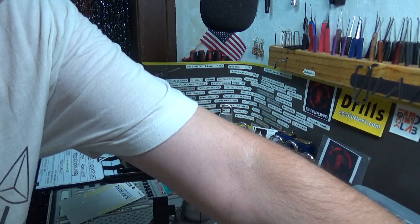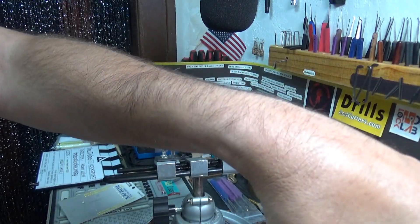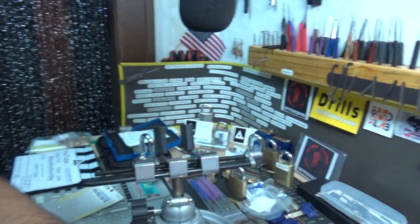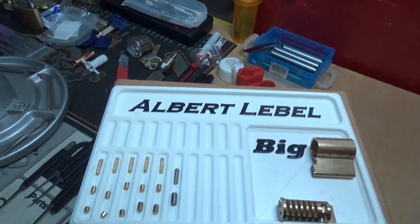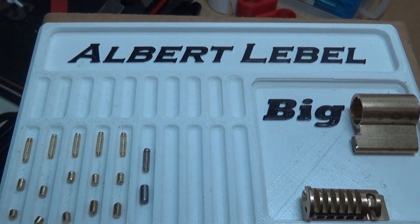So we can zoom in on the cores that are inside of these locks. Feast your eyes on one of the most horrible cores, at least that I've ever seen in a padlock.